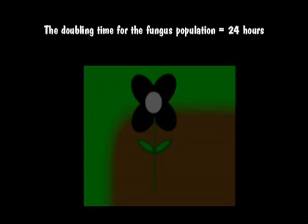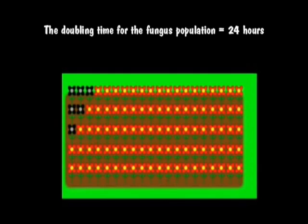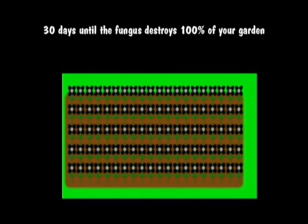And this can be applied to population growth. To give an example, let's say that you have a beautiful flower garden that suddenly becomes affected by a new type of fungus. The doubling time for the said fungus is 24 hours, so that every day the fungus population would double in size, thus rapidly killing your flowers. And let's say that considering the size of your garden, it will take 30 days for the fungus to completely destroy it.